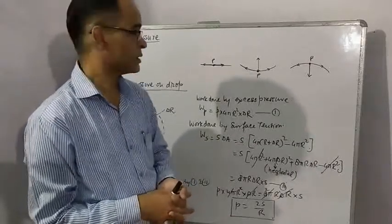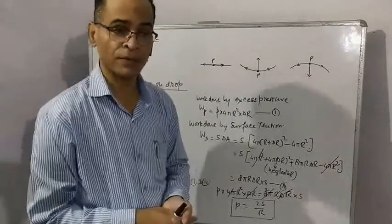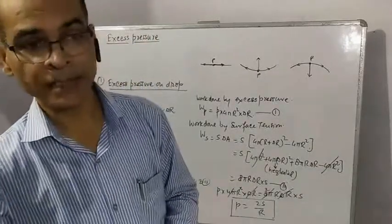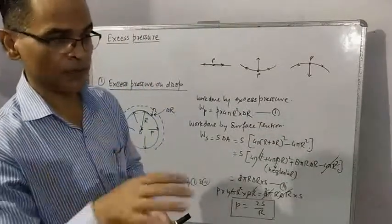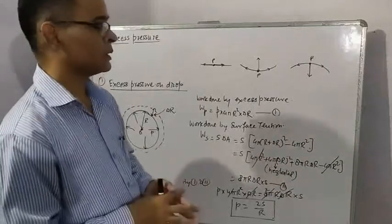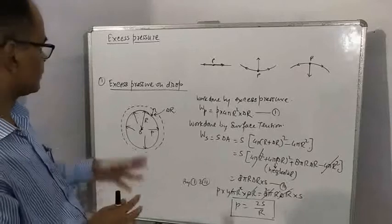So it is very clear from these diagrams that there is some resultant force acting on the surface. And because of that resultant force, there is some excess pressure on the meniscus, on the liquids. Let us find the value of excess pressure on a drop.